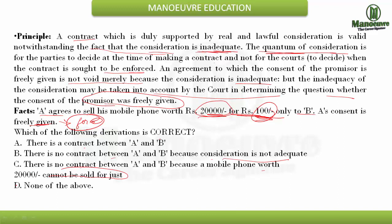The options are: there is a contract between A and B; there is no contract between A and B because consideration is not adequate; there is no contract between A and B because a mobile phone worth Rs. 20,000 cannot be sold for Rs. 100; or none of the above. We have to stay within the principle — the quantum of consideration is not important. The adequacy is not to be considered here, as the amount exists and consent was freely given. Therefore, there is a contract between A and B as the parties mutually agreed to sell the Rs. 20,000 phone for just Rs. 100. You must not go outside the given principle — it is the formula you apply to get the correct legal answer.